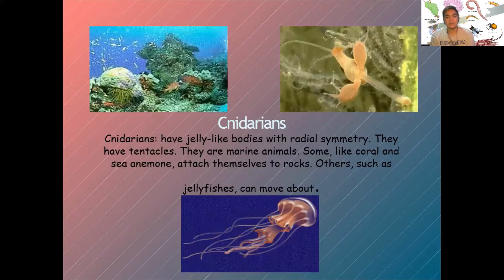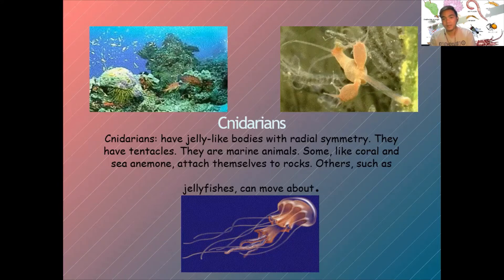Cnidarians have jelly-like bodies with radial symmetry and tentacles. They are marine animals. Some, like coral and sea anemone, attach themselves to rocks and obtain nutritive substances from them. Others, such as jellyfish, can move around.